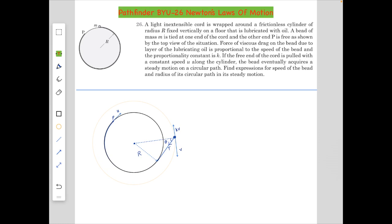A light extensible cord is wrapped around a frictionless cylinder of radius R fixed vertically on a floor that is lubricated with oil. A bead of mass M is tied at one end of the cord and at the other end P is free as shown by the top view of the situation.